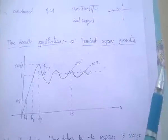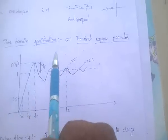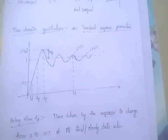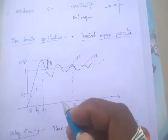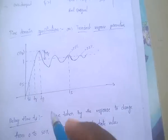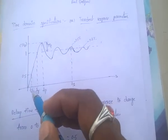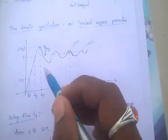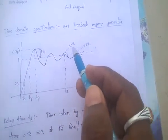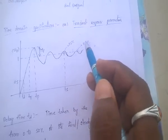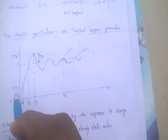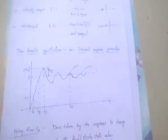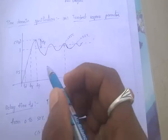Next: time domain specifications, which are transient response parameters. This is the system response — it is a practical (under-damped) system. Here we have TD, TR, TP, MP, plus or minus 5% and plus or minus 2% tolerance bands, settling time TS, final value 1, and the 50% value of 0.5.